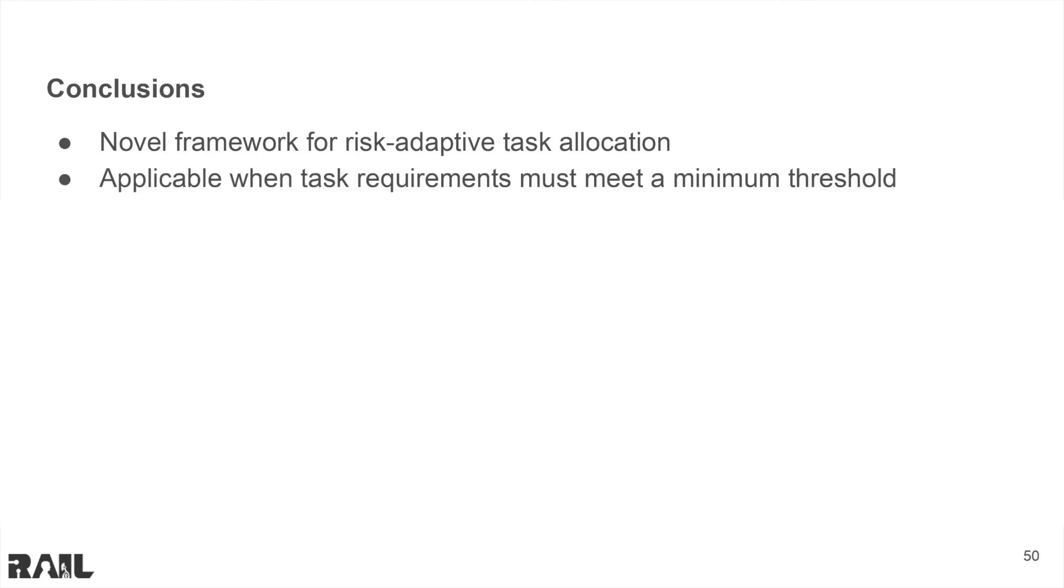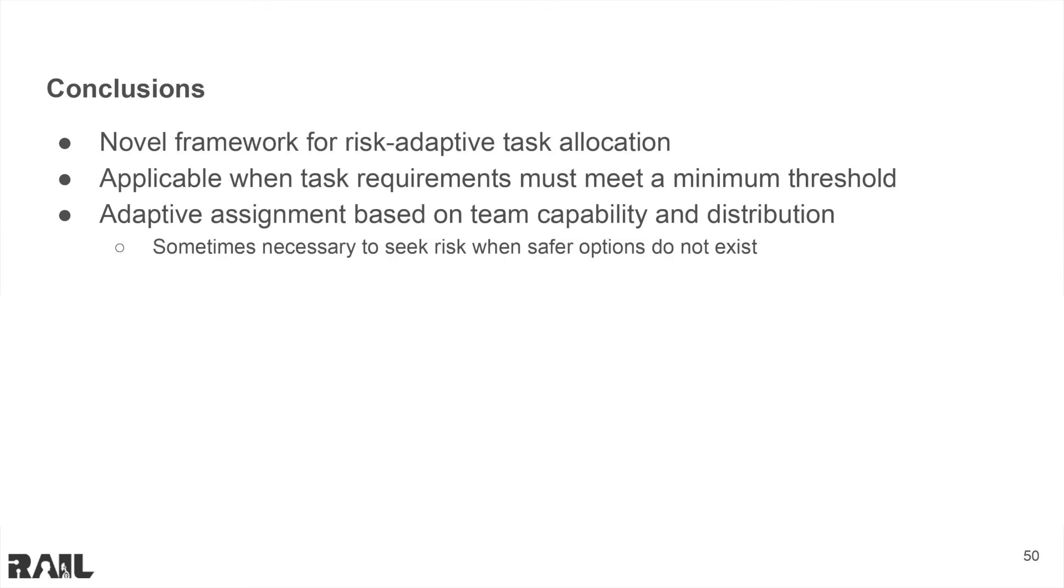This method is applicable when there are trait requirements that must meet a minimum threshold and fail if they are not met. Our method adapts its allocation assignment based on team capability and trait distribution in order to improve the probability that tasks are a success. This means taking risk when safer options do not exist.